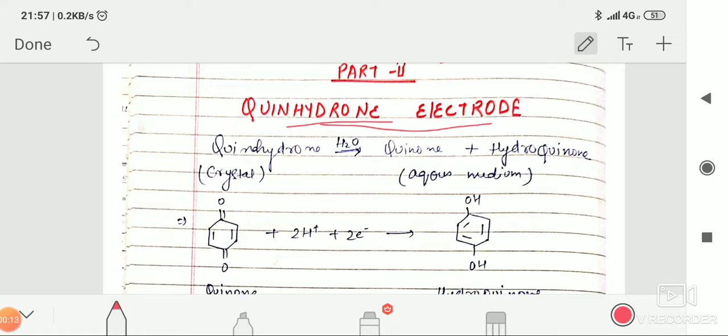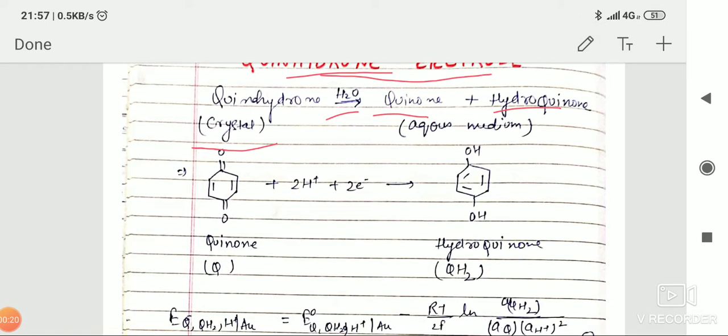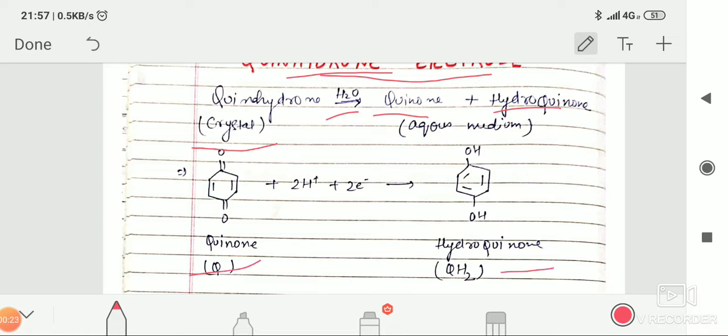First of all, what is quinhydron? Quinhydron is a crystal which upon dissolving in water dissociates into quinone and hydroquinone. This is quinone and this is hydroquinone.